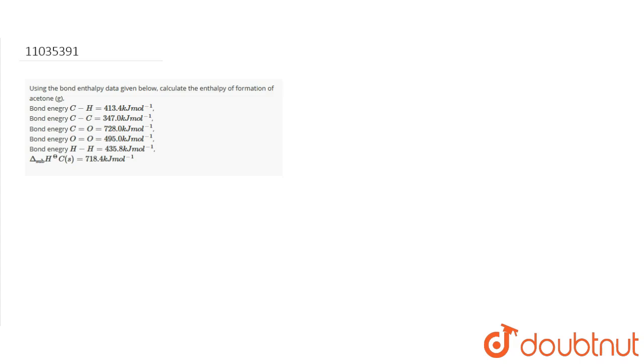So first, we write the heat of formation of acetone, which is the standard equation: 3 carbon in its standard form (graphite) plus 3 H2 gas plus half O2 gas gives CH3COCH3 gas. We need to find delta H, the heat of formation of CH3COCH3.